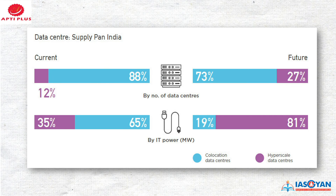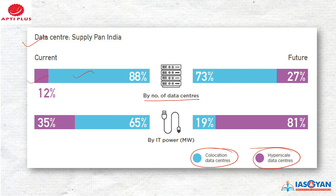Looking at the pan-India supply of data centers: the blue color represents co-location data centers and the purple represents hyperscale data centers. Currently, co-location accounts for 88% of data centers. It is expected that in the future, the ratio of hyperscale data centers should increase to 27%, and in terms of IT power in megawatts, the government projects this would expand to cover 81% going forward, expanding pan-India.